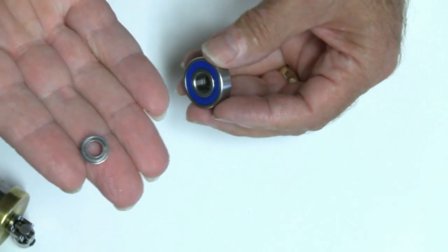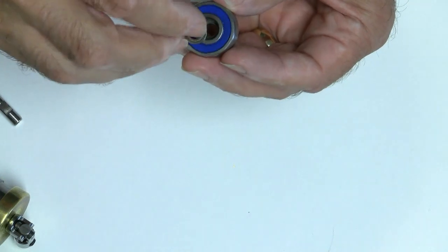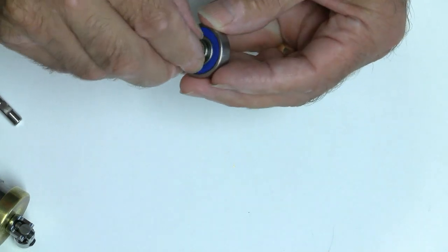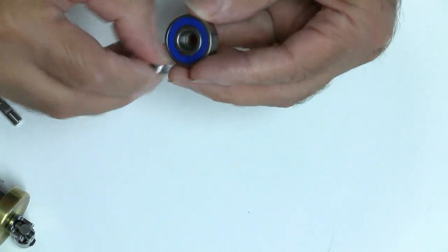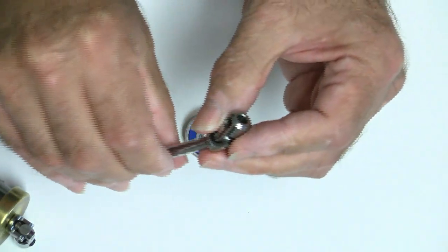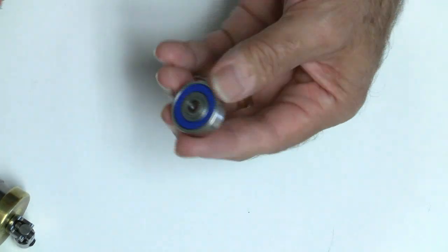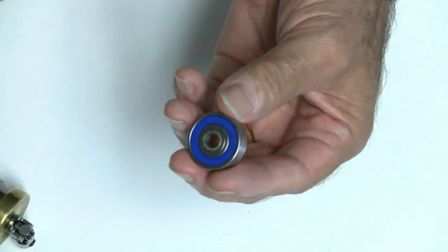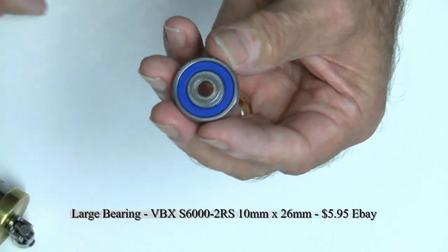These little bitty bearings have an outside diameter of 10 millimeters, so it allows them to fit right inside of the big bearing, and an inner diameter of 6 millimeters so that the shaft of the universal joint goes right into it.